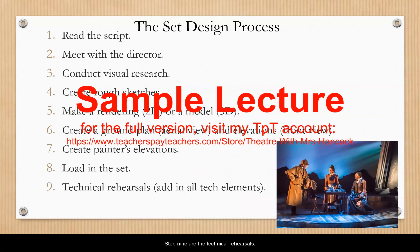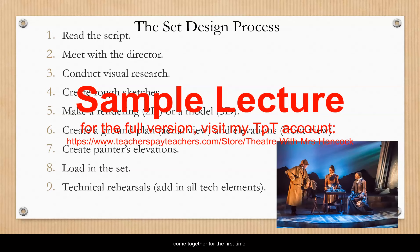Step nine is the technical rehearsals. This is a period of time, usually a week or two, when all the technical elements and the actors come together for the first time. The play is run over and over again, stopping and starting to fix different elements until finally it is ready for an audience.